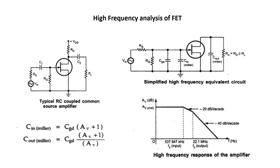High frequency analysis of FET. The figure shows the typical common source amplifier and the high frequency equivalent circuit. At high frequencies, coupling and bypass capacitors act as short circuit and do not affect the amplifier high frequency response. The equivalent circuit shows the internal capacitances which affect performance at high frequencies. Using Miller's theorem, the internal capacitance Cgd can be split into C_in(Miller) and C_out(Miller). C_in(Miller) = Cgd × (Av + 1) and C_out(Miller) = Cgd × (Av + 1) / Av.